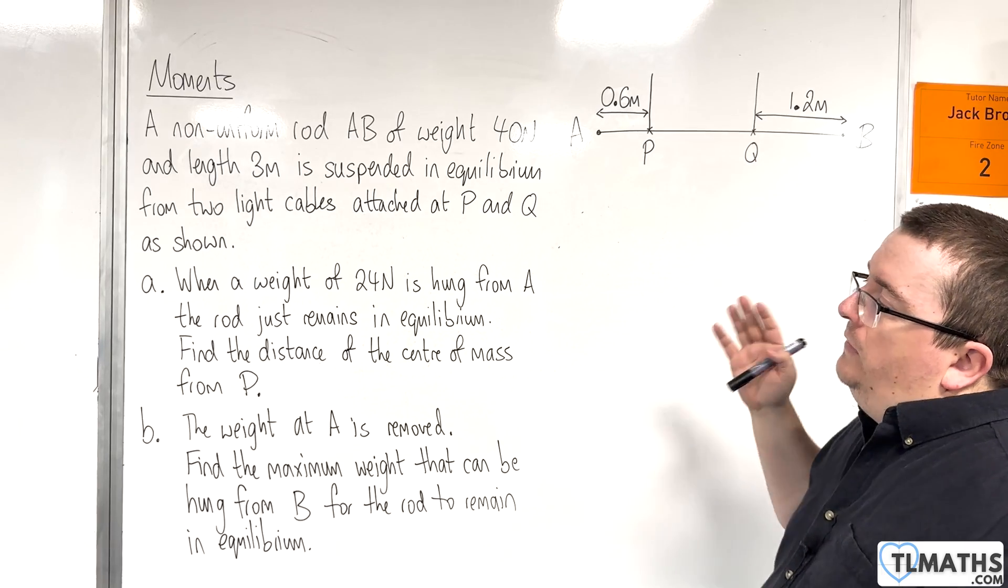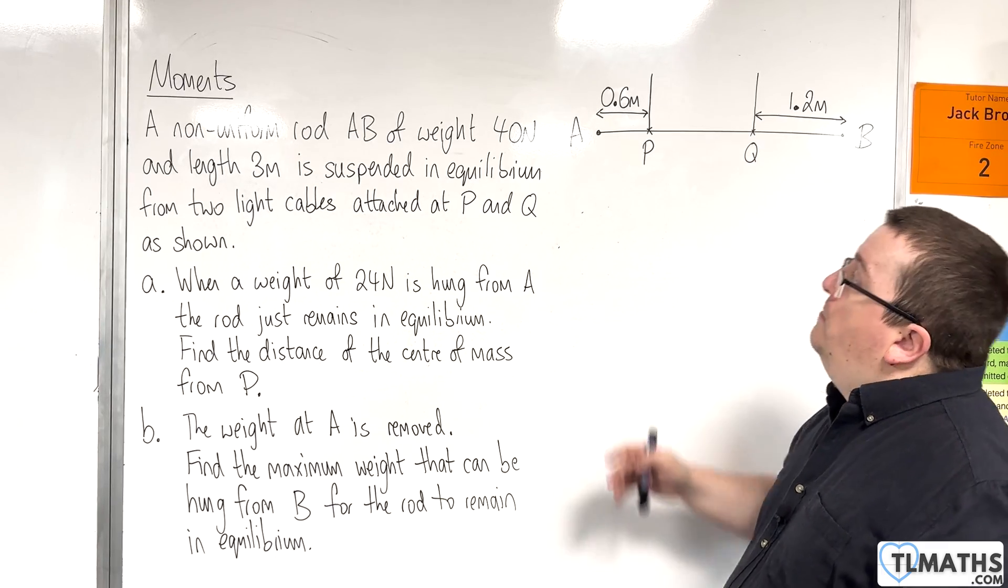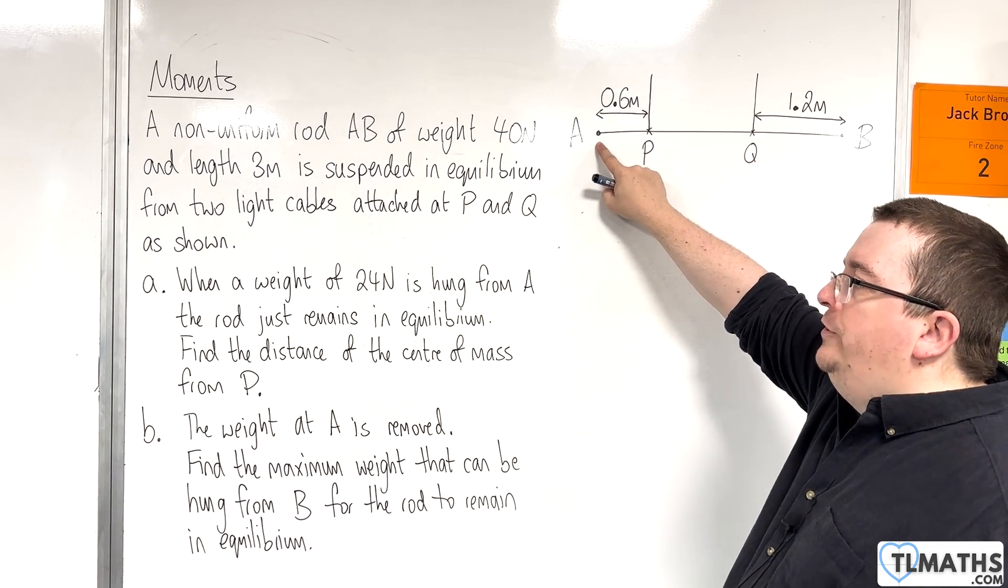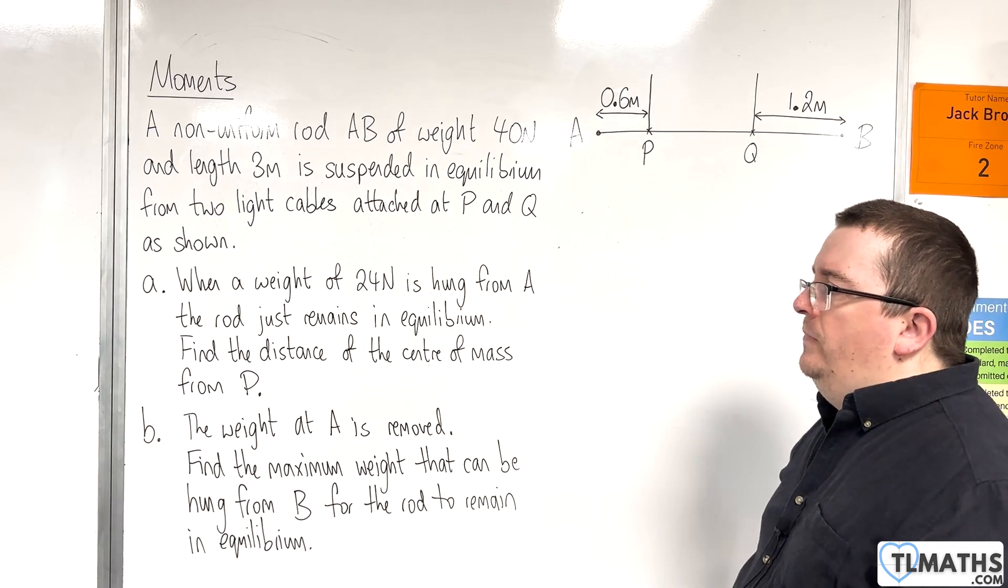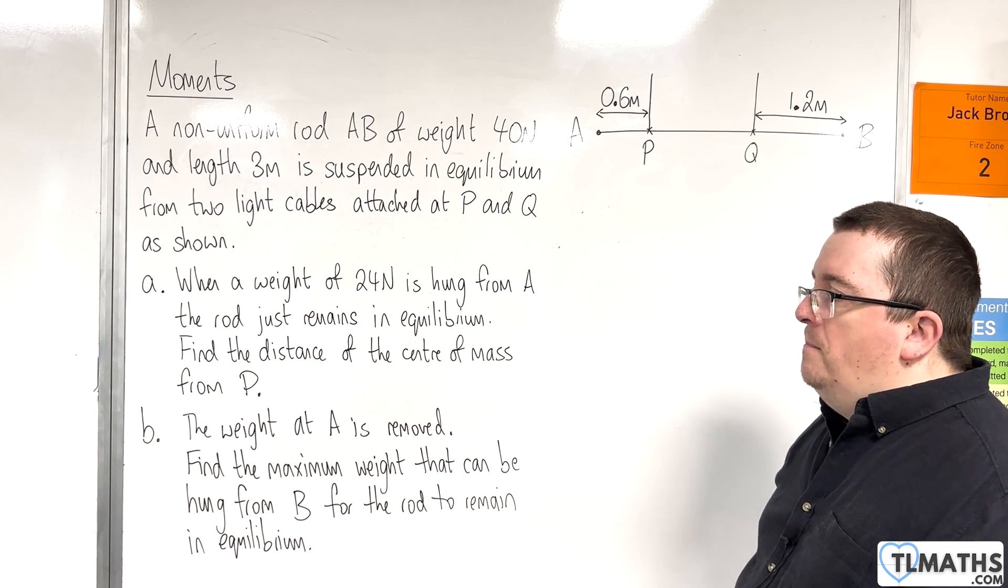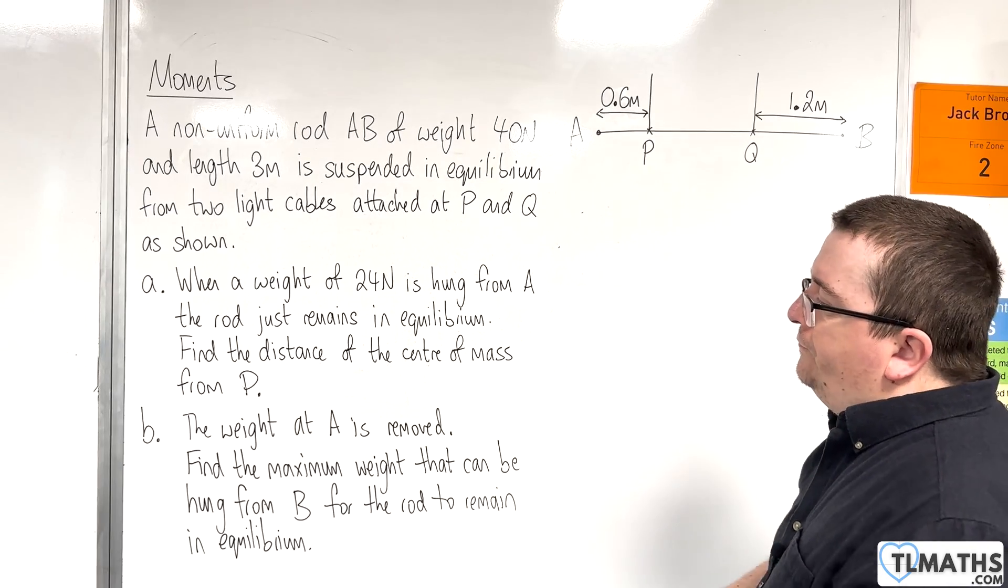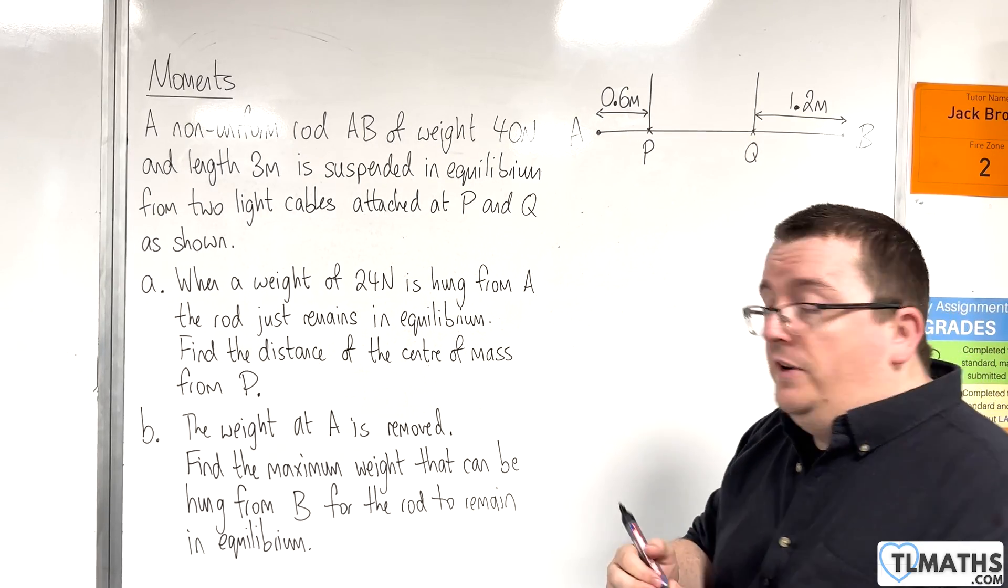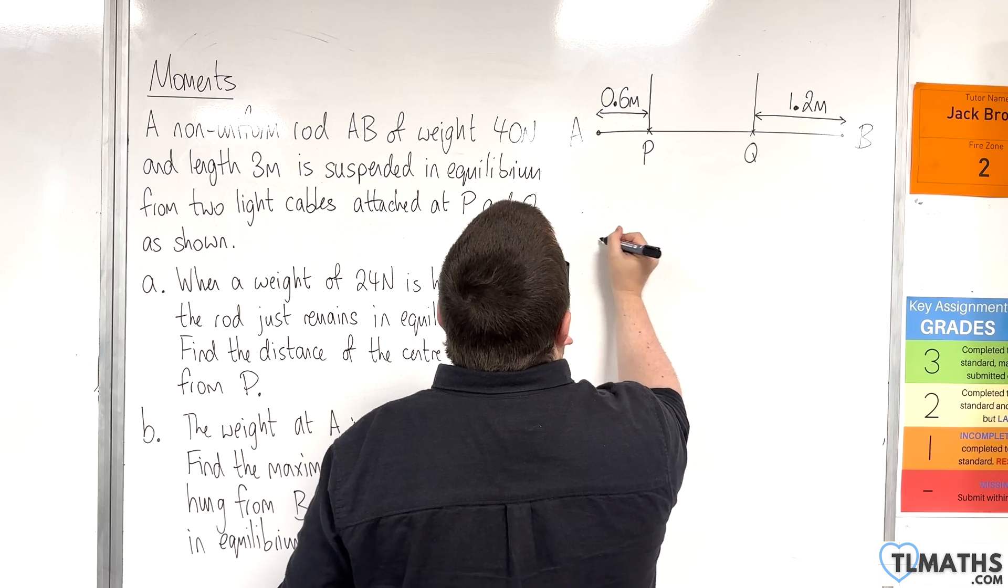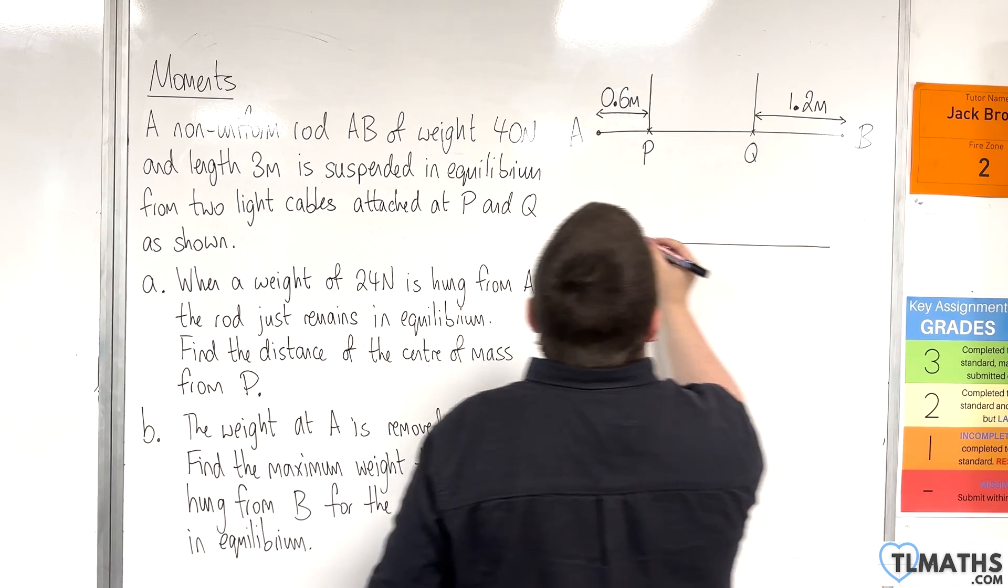When a weight of 24 newtons is hung from A, the rod just remains in equilibrium. Find the distance of the centre of mass from P. So let's draw a diagram so we can visualize what's going on here. So here's our rod.